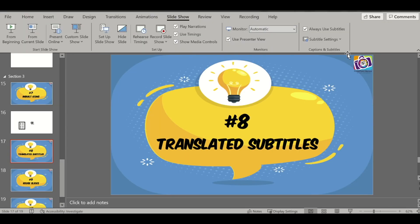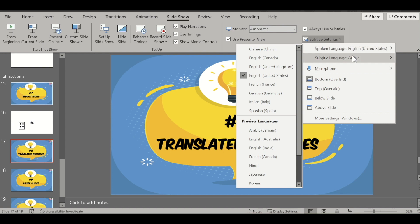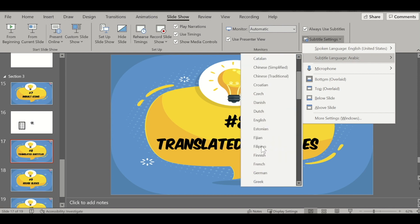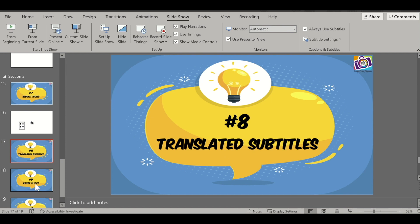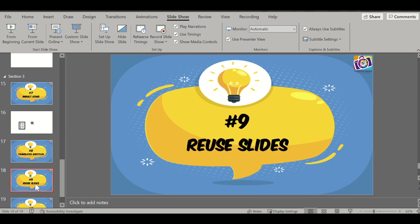Let's go ahead and change the output language to Hindi. Select Hindi, then go to the slideshow. For example: 'This is a demo for translated subtitles' — and it gives you the translation of the text in Hindi. That's how you insert translated subtitles.